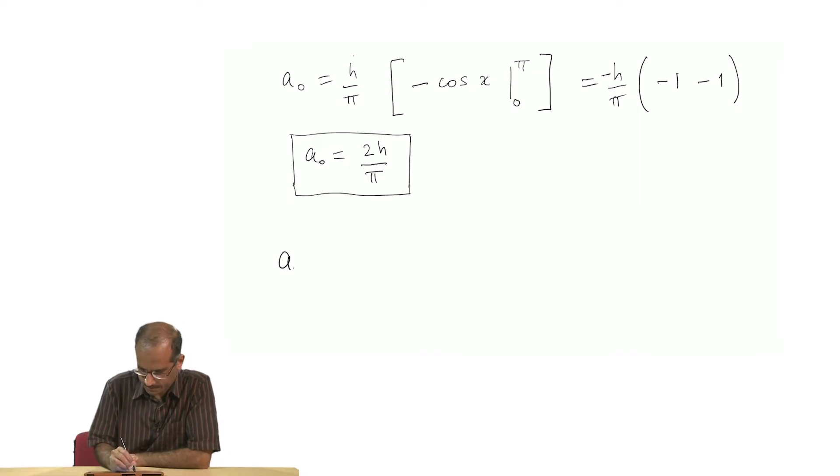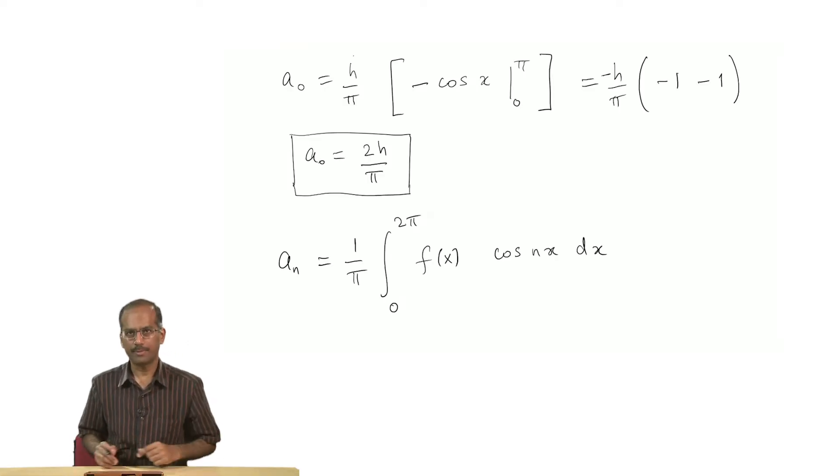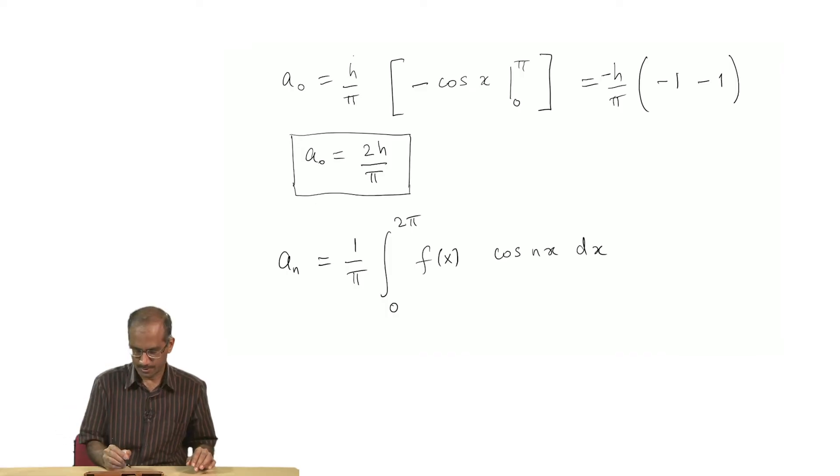The next quantity I want to find is the a_n's. a_n's are given by 1 by π, 0 to 2π, f of x cos nx dx. Remember that these coefficients, both a_n and b_n, when you evaluate them through this integral, when the limits of the integral go between some range which is l, the factor that comes in front will be 1 divided by l by 2.